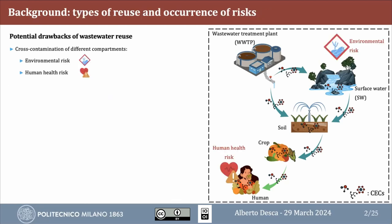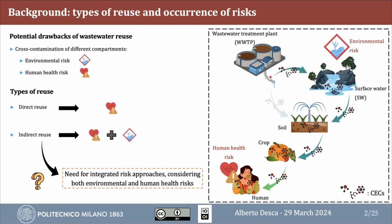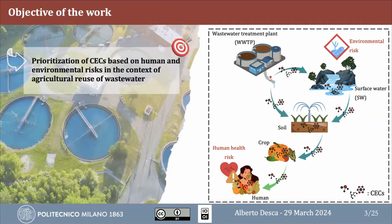In the context of reuse, we can have two kinds of risks: environmental and human ones. These risks are a function of the type of reuse we adopt. We can have direct use, which is more focused on human health risk, and environmental use, which instead considers both risks. So at the end, we need an integrated risk assessment procedure that considers both the risks.